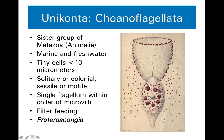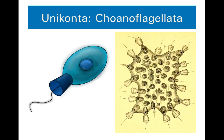One genus within Choanoflagellata is Proterospongia, a name implying it's an early form of a sponge. Here's another representation of a choanoflagellate showing its flagellum, its collar of microvilli, and the cell body with nucleus inside. And here is a colonial form — you can see lots of choanoflagellates together bound by a non-living matrix. When we talk about sponges in a few weeks, you'll need to think back to this: it's not just déjà vu — it is a choanoflagellate-like structure that we see in sponges.